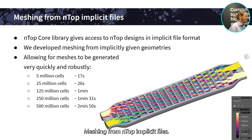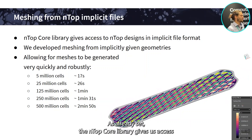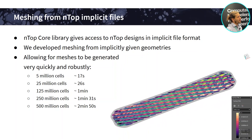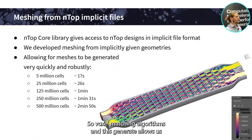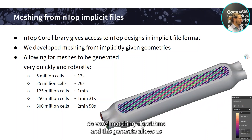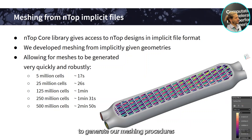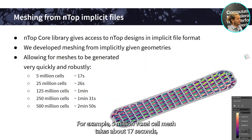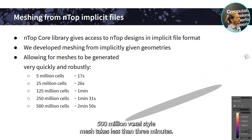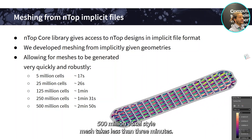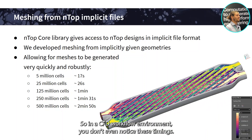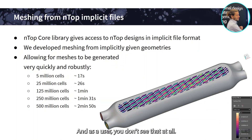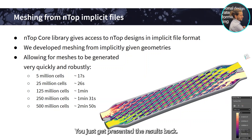Meshing from NTOP implicit files: the NTOP core library gives us direct access to NTOP designs in implicit file formats. We developed voxel meshing algorithms on top of that, allowing us to generate meshes very quickly. For this heat exchanger, for example, a 5 million voxel cell mesh takes about 17 seconds, and a 500 million voxel cell mesh takes less than 3 minutes. In a CFD workflow, you don't even notice these timings — as a user, you just get the results presented back.